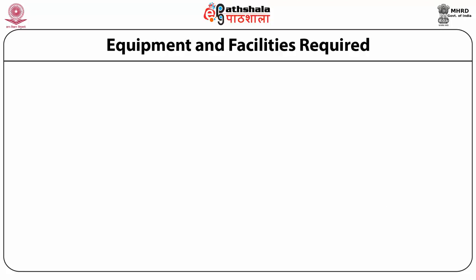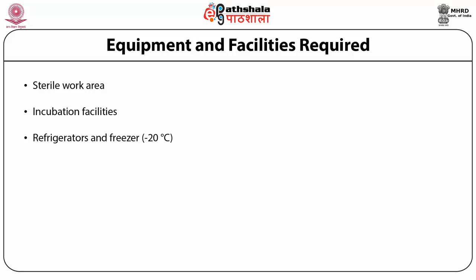Equipment and facilities required for tissue culture or organ culture: you need a sterile working area, so you can use a laminar airflow cabinet. Incubation facilities include CO2 incubators to maintain pH and temperature. Refrigerators and freezers at minus 20 and minus 80 degrees are needed. Inverted microscopes are needed to check growth patterns. Tissue culture plasticware and culture vessels are required, and filters such as syringe filters and membrane filters are needed for sterilization.